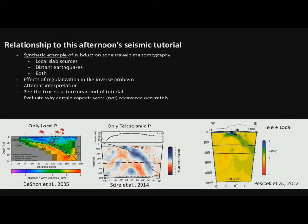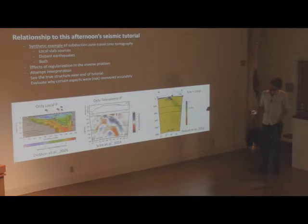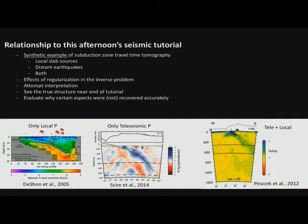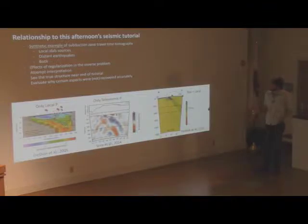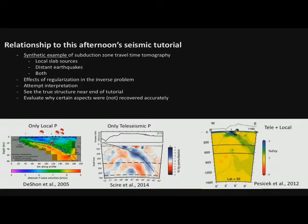There's also a seismic tutorial I'll lead this afternoon on fairly simple body wave tomography of subduction zones using synthetic data — so there's a real answer and I know it, but you won't until the end. We'll try this with local slab sources, an example from Central America using local earthquakes to image. You could also image with only teleseismic data, like an example from the Central Andes, or combine both types and get a continuous view from high resolution to large-scale slab structure.